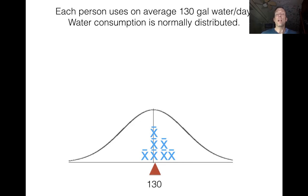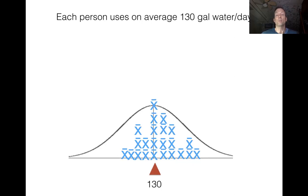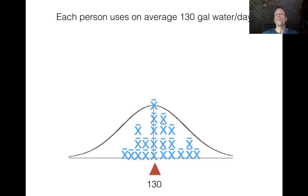If we do this procedure over and over many times, it's going to start to look like a bell shape. If we look at the shape of all the sample averages, we might say, 'Oh my goodness, this is a normal distribution' — but actually it's approximately normally distributed, which is good enough for us to start doing some preliminary probability work.